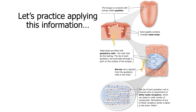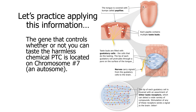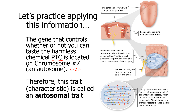Let's apply this information. There's a specific gene that plays a significant role in whether or not you can taste a harmless chemical called phenylthiocarbamide — you do not need to know that name — or PTC for short. The gene that controls whether you can taste PTC is found on chromosome number 7. That number is not important, but it's important that chromosome 7 is an autosome — remember autosomes are chromosomes 1 through 22. Because of that, we say this is an autosomal trait, denoting that the gene is found on one of the autosomes.